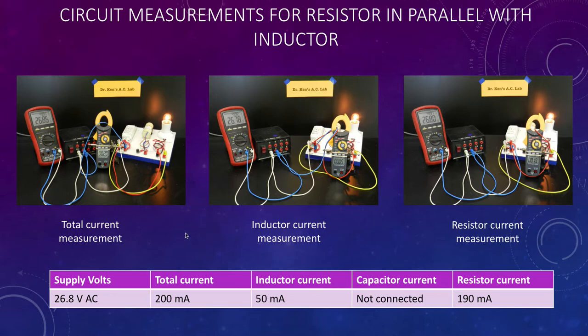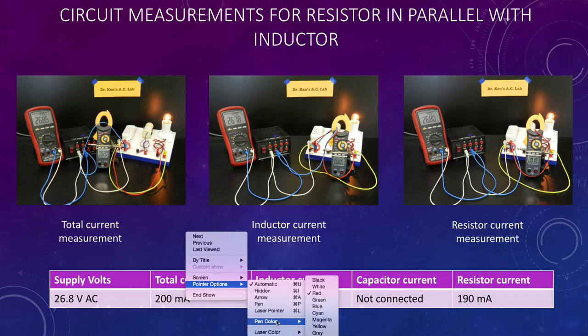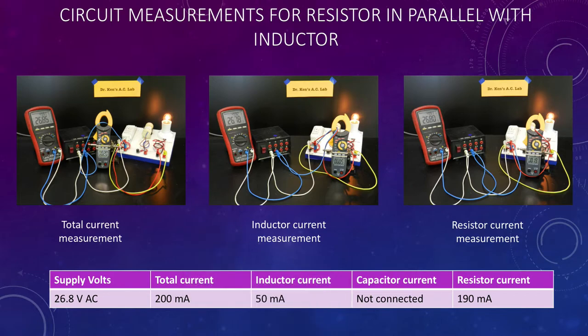So here's our basic setup. You can see here we're measuring the supply current and the supply voltage, so you can see at about 26.8 volts for our supply and 200 milliamps is our current. You can see that our inductor has been connected in parallel with our lamp or our resistor. You'll notice that the capacitor is not connected at all.